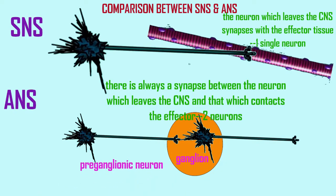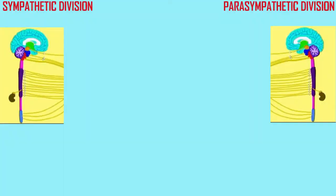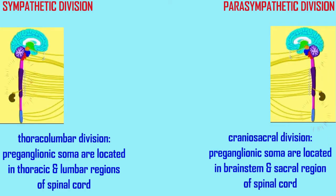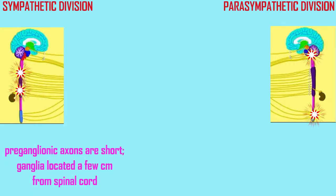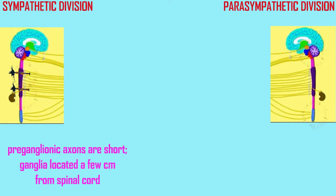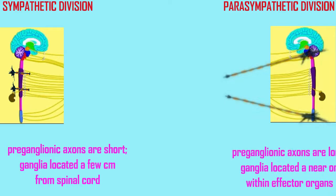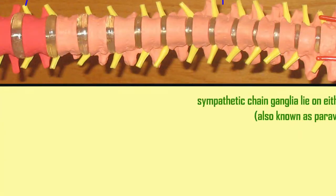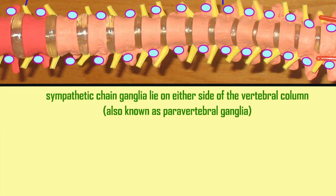Where are these ganglia? It does vary, because in the two halves of the autonomic nervous system there are differences. In the sympathetic division, the ganglia are close to the spinal cord, most of them running alongside the vertebral column. While in the parasympathetic division, the ganglia tend to be near or inside the effector organs. The majority of these ganglia are the sympathetic chain ganglia, which lie on either side of the vertebral column, also known as the paravertebral ganglia.